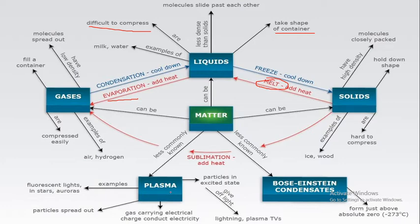The fourth state of matter is plasma. This is an excited particle state in which gas molecules are ionized to form positive ions and negative electrons. Plasma is contained in fluorescent lights, auroras, and even stars like the sun. The fifth state of matter is Bose-Einstein condensate, or BEC. It is obtained when gases are cooled to very low temperatures near absolute zero — that is, zero Kelvin or minus 273 degrees Celsius.